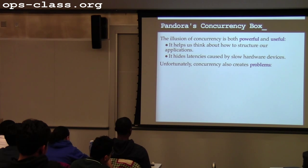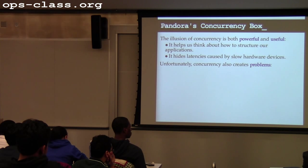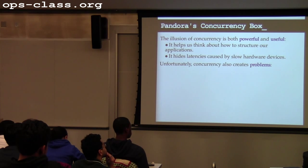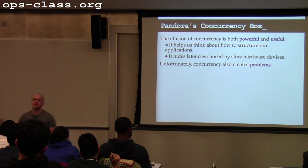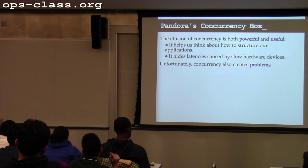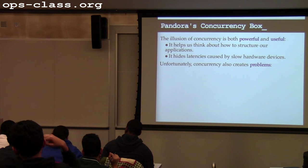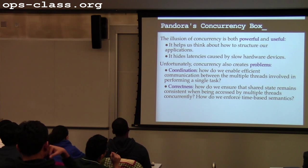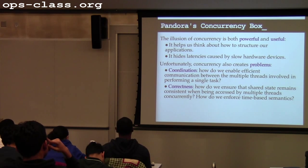Unfortunately, concurrency also creates problems. One big problem is that we're trained to think about programming as a sequential series of steps. We're not used to the idea that our program can be stopped at any time. We do things that require multiple steps to happen together, not realizing that if we're stopped in the middle we've left things in an inconsistent state — and if somebody else observes them, bad things can happen.